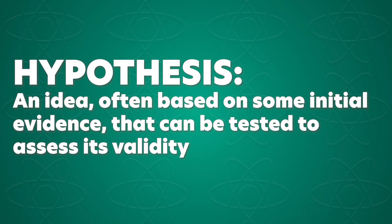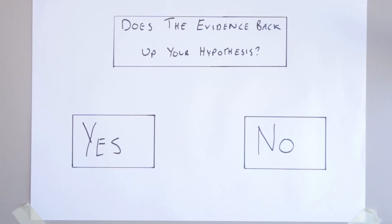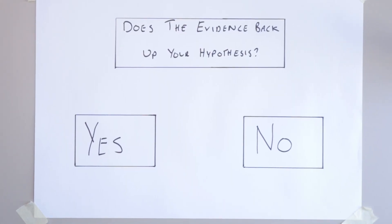In science, it's kind of similar, except often the explanation comes first. Scientists have an idea about something that they want to test. This is known as a hypothesis — and more on that a little later. The evidence is then collected to see if it matches up with the hypothesis that they had.